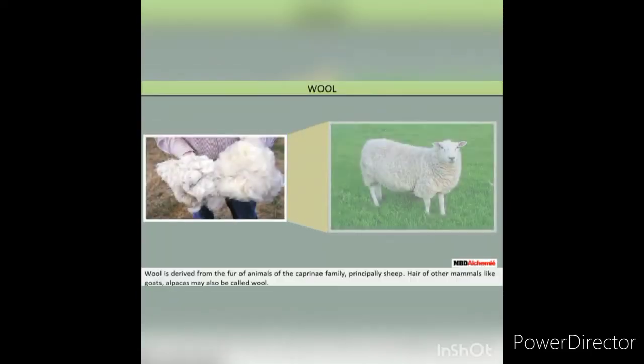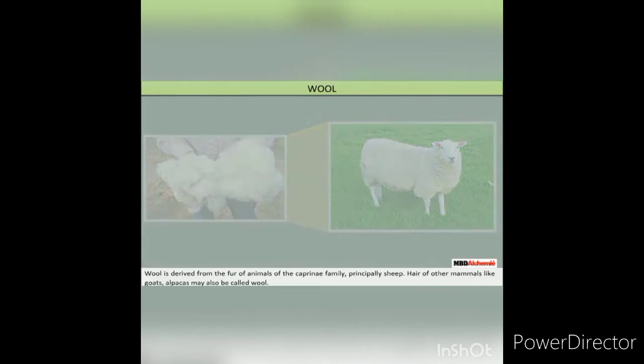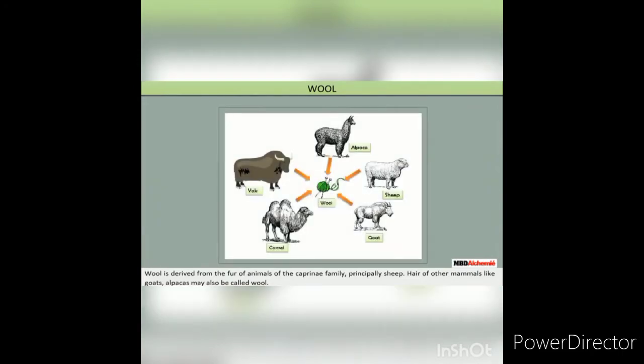Wool is derived from the fur of animals of the Caprine family, principally sheep. Hair of other mammals like goats and alpacas may also be called wool.